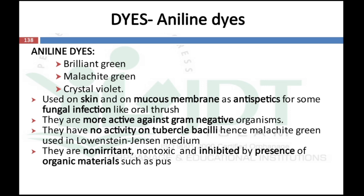Aniline dye examples include brilliant green, malachite green, and crystal violet, which are used on skin and mucous membranes as antiseptics for fungal infections like oral thrush. They are more active against gram-positive organisms and have no activity on tubercle bacillus — hence malachite green is used in Löwenstein-Jensen medium as a differentiation medium. These are non-irritant and non-toxic but are inhibited by organic materials such as pus, so they cannot be used as disinfectants in the presence of organic material.